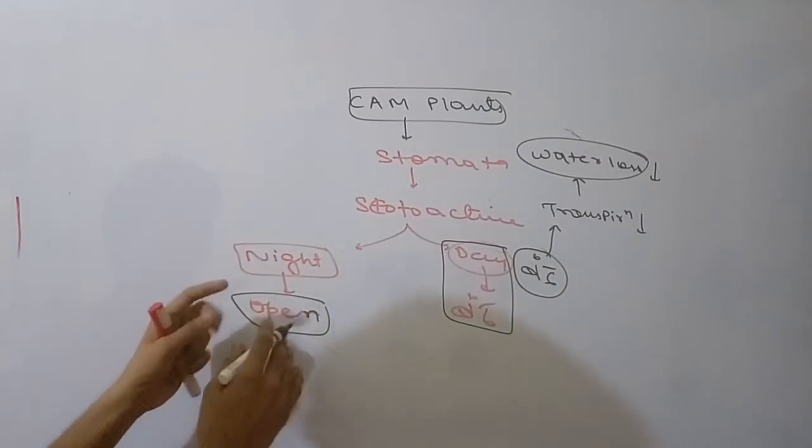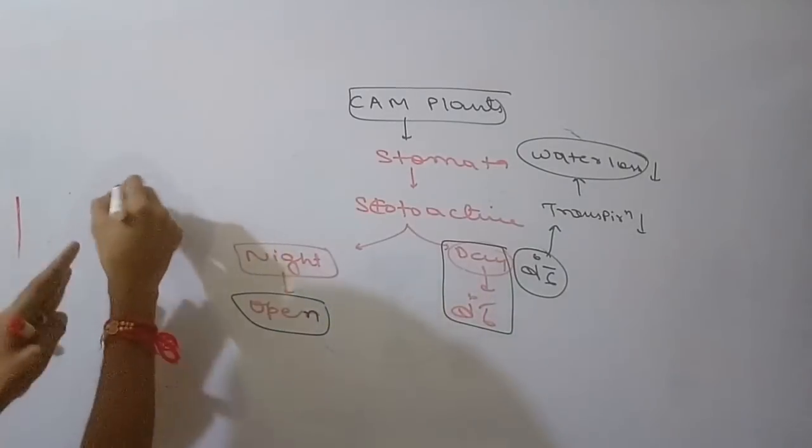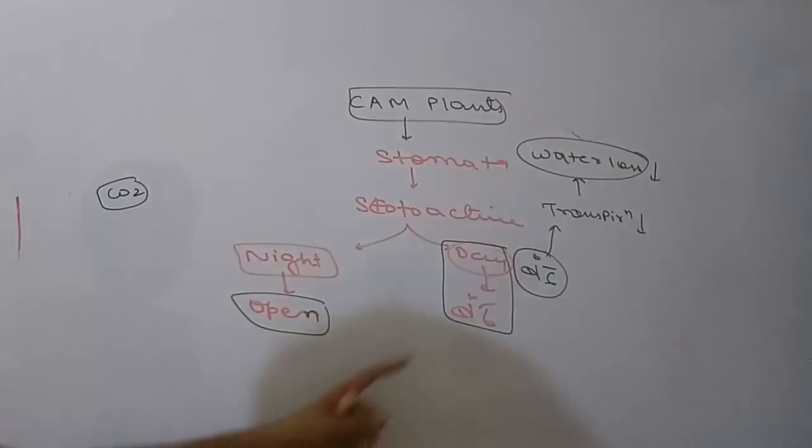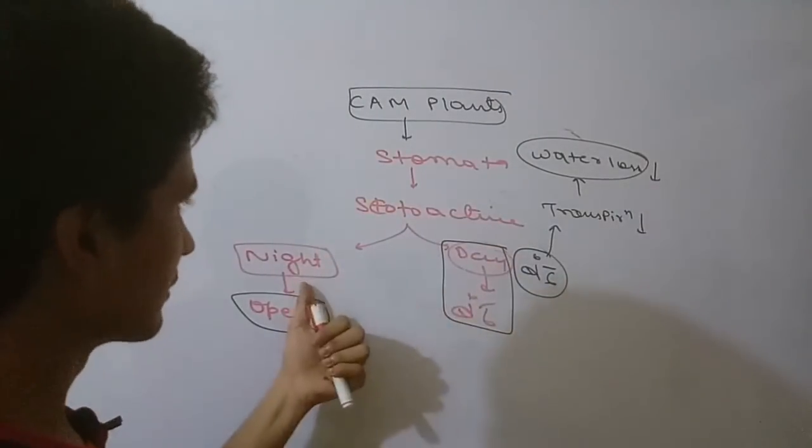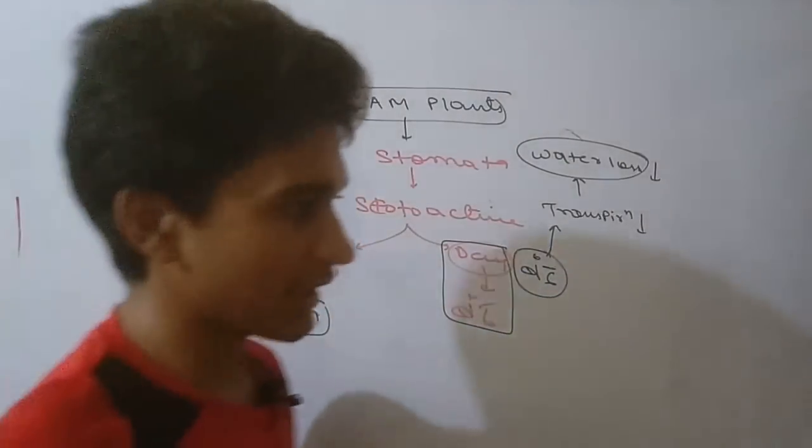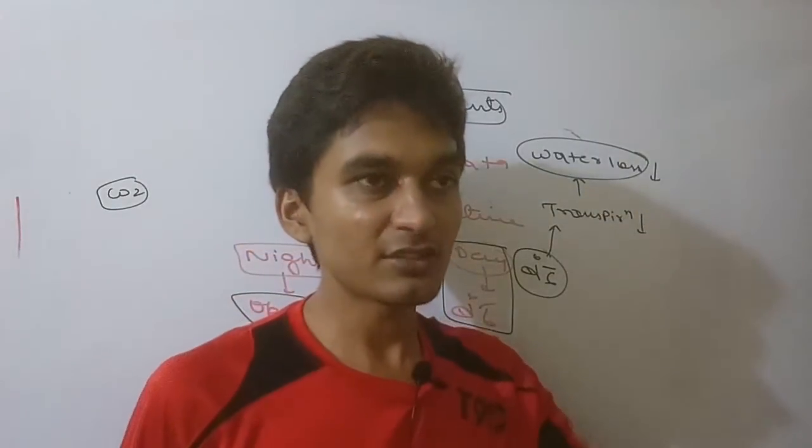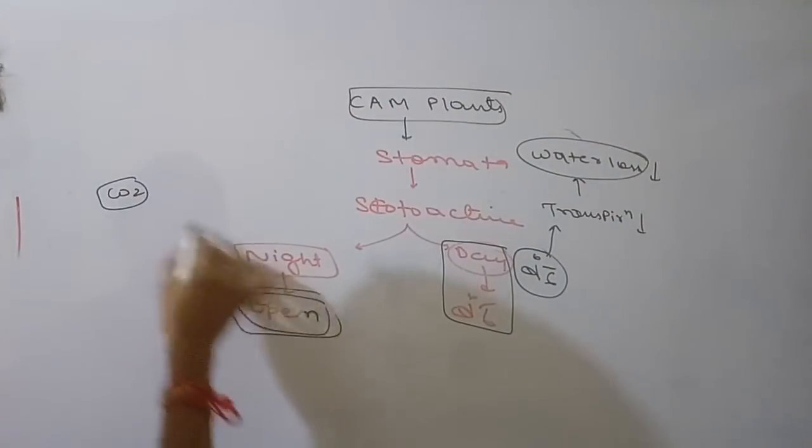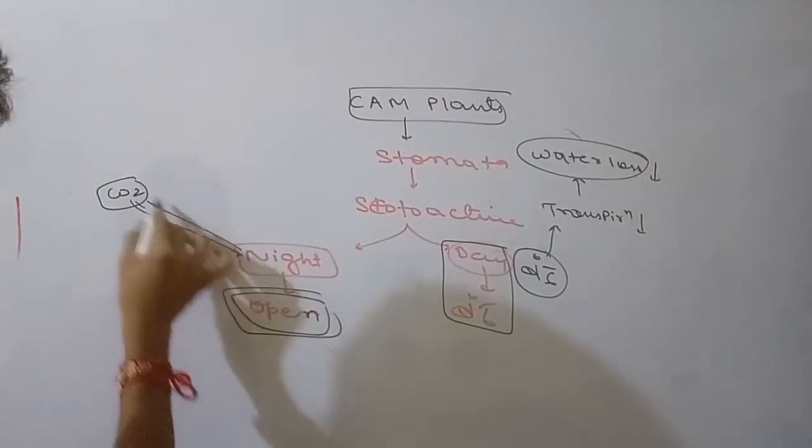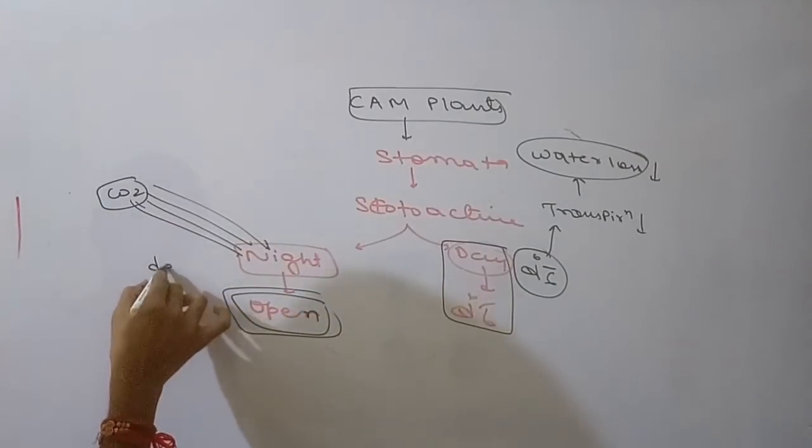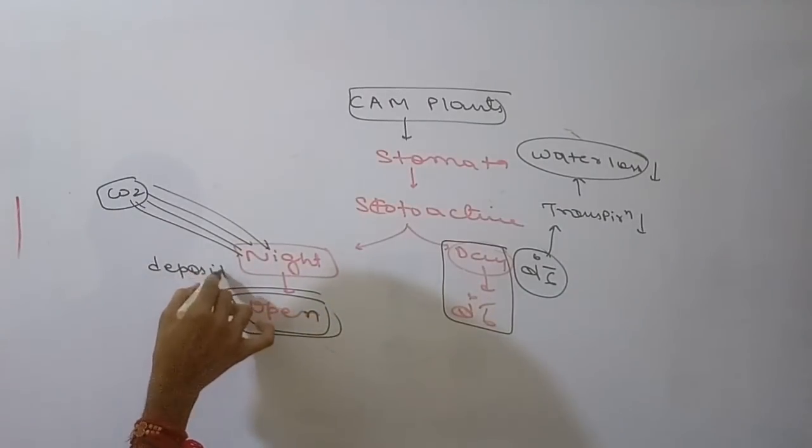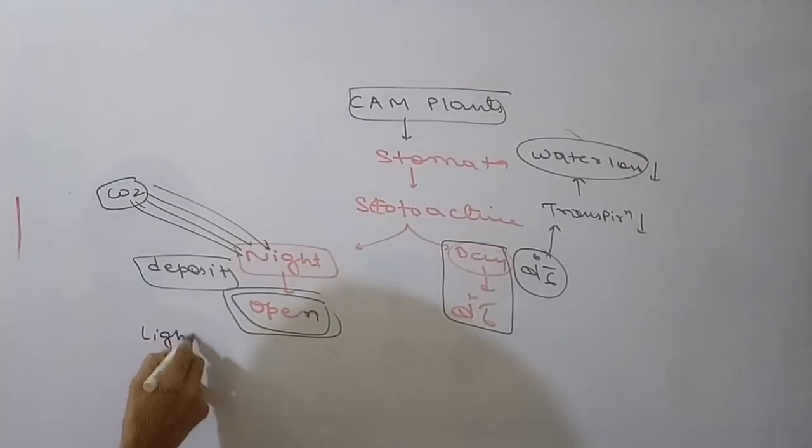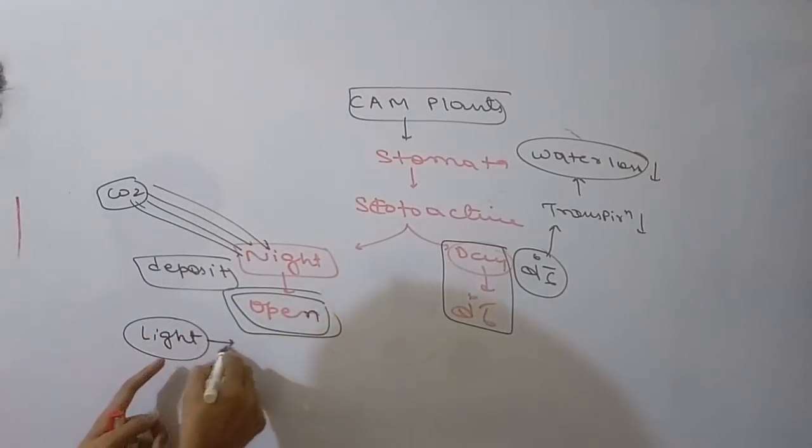At night, stomata open and CO2 can enter. During night, CO2 uptake happens. At night, stomata are open and CO2 enters and gets deposited. But at night there is no light.